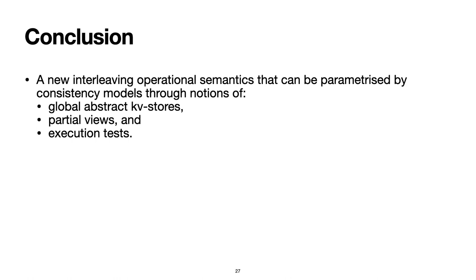We propose execution tests as operational definitions of consistent models, with examples including causal consistency and snapshot isolation. We show that these operational definitions are equivalent to the well-known axiomatic definitions. All trace equivalence proofs are non-trivial, but we provide several levels of general constructors so we only need to focus on the equivalence relations between execution tests and visibility constraints.